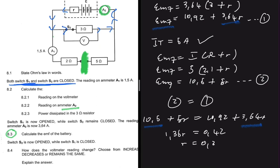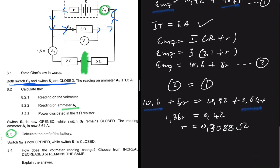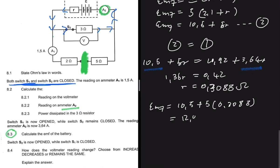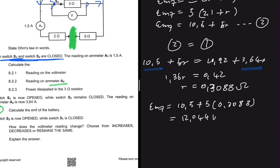So r ≈ 0.308Ω. We have the internal resistance and can substitute it into either equation to find the EMF. Substituting into Equation 2: EMF = 10.5 + 5 × 0.308 = 10.5 + 1.544 = 12.044V. So our EMF is approximately 12.044 volts.